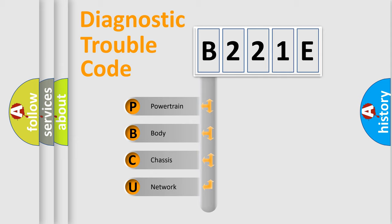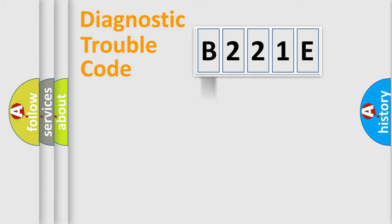We divide the electric system of automobile into four basic units: Powertrain, Body, Chassis, and Network. This distribution is defined in the first character code.